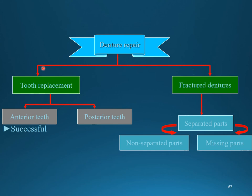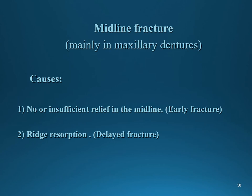The most commonly seen are midline fractures, mainly in the maxillary denture. Causes include insufficient relief in the midline — known as an early fracture — and residual ridge resorption, which is a delayed fracture and a very common cause of fractures in dentures.